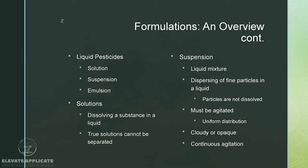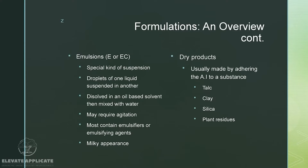Suspensions must be agitated so they have uniform distribution. They can appear cloudy or opaque and really do need continuous agitation to stay mixed. Emulsions, which go by E or EC — EC means emulsifiable concentrate — are a special kind of suspension. There are droplets of one type of liquid suspended in another, generally dissolved in an oil-based solvent and then mixed with water. They may require agitation, most contain emulsifying agents already packaged within them, and they can have a milky appearance.